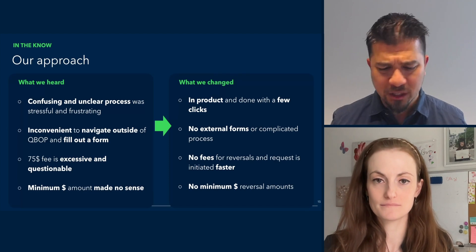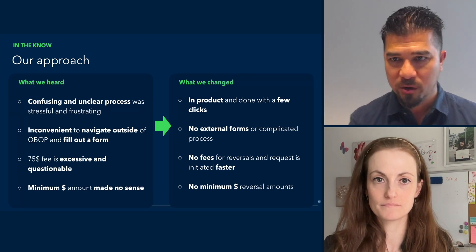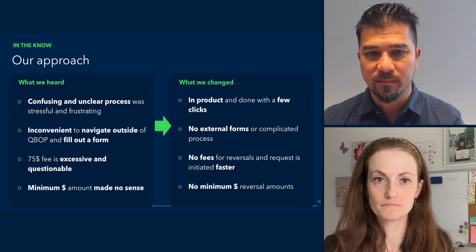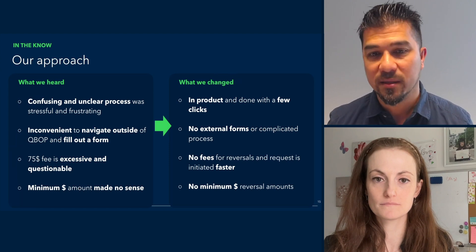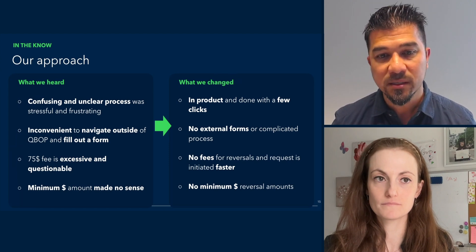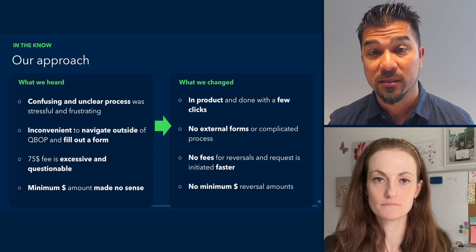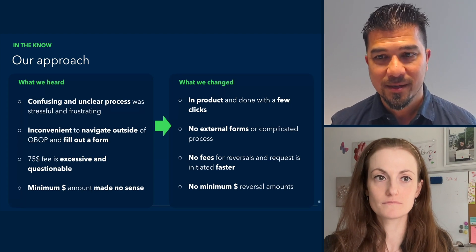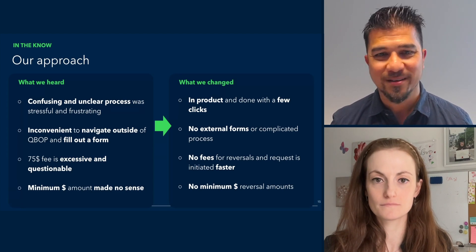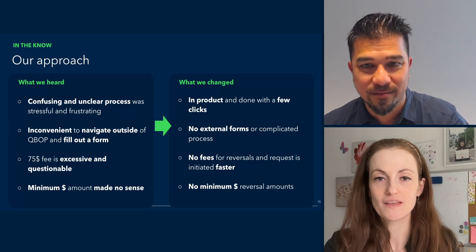From a logistics perspective, when you run your payroll and pay them, say, exactly on Friday, you have five business days to make this request in the US. And for Canada, it's four days. I'll pass it on to Nitsen to show you what this simple process looks like now.